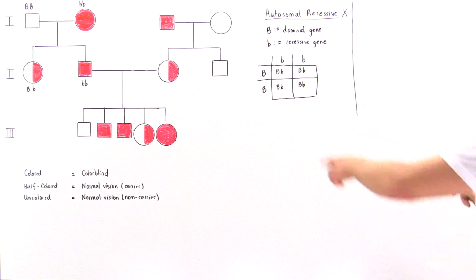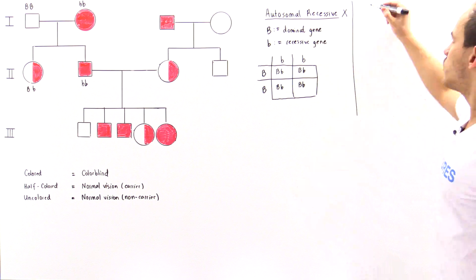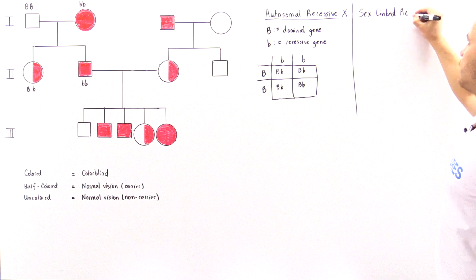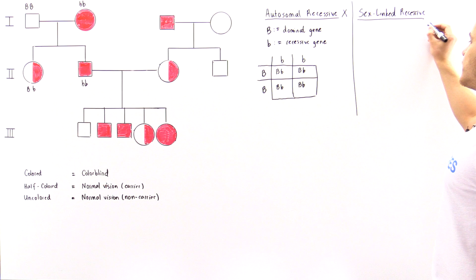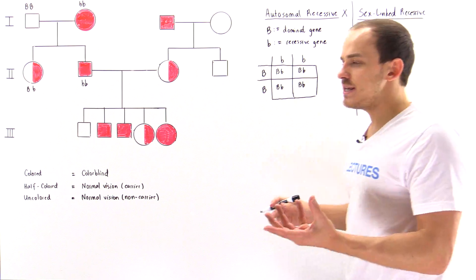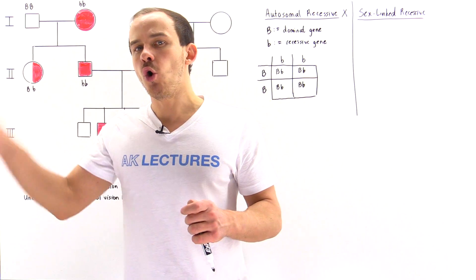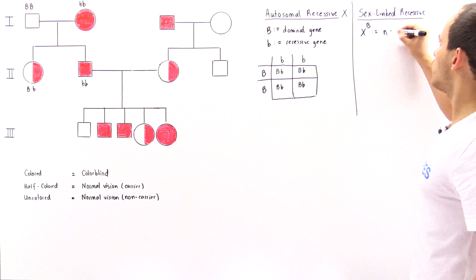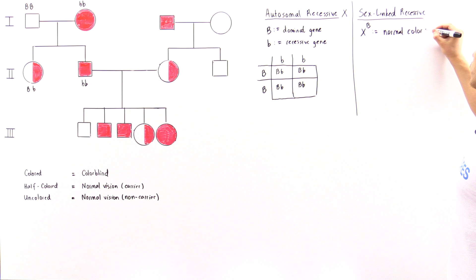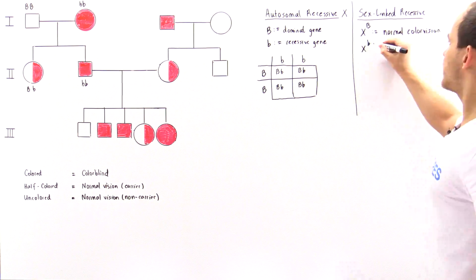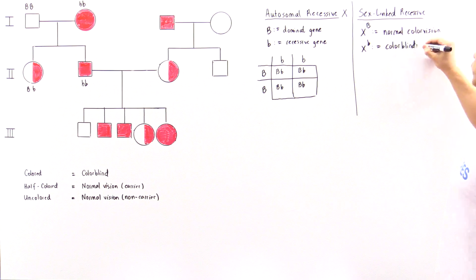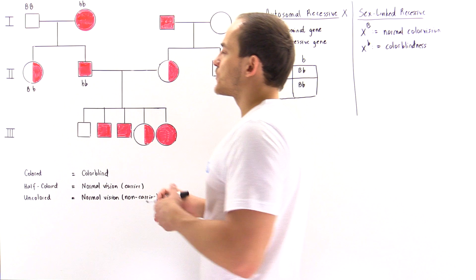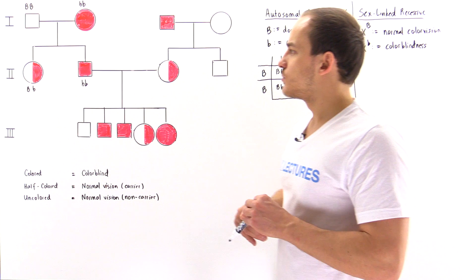Since it can't be autosomal, it must be sex-linked recessive. Let's confirm that the colorblindness gene is sex-linked recessive. This means the colorblindness gene is located only on the X chromosome, never the Y. So X^B represents normal color vision, X^b represents the colorblindness allele, and Y is simply the chromosome determining maleness and does not carry that trait.